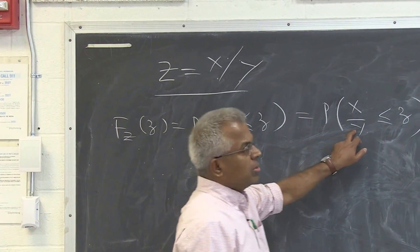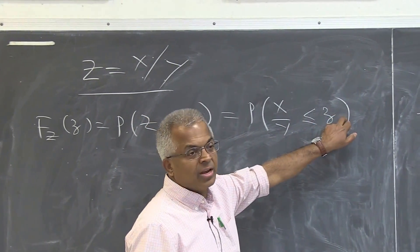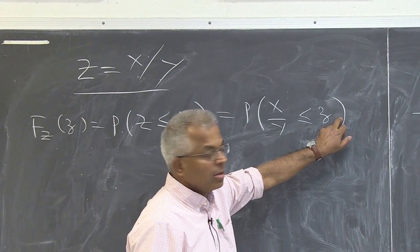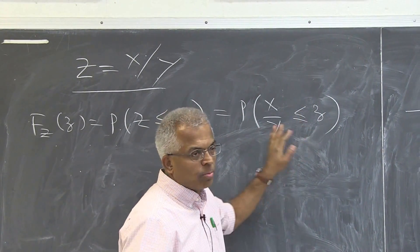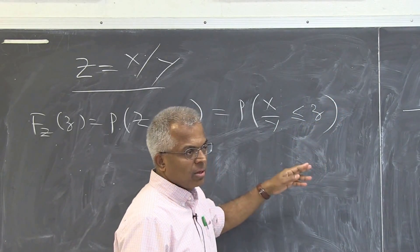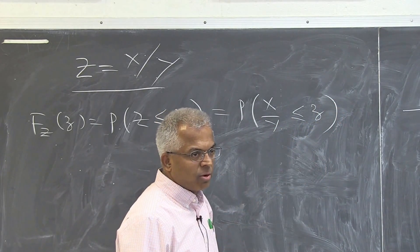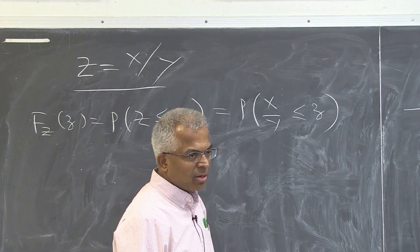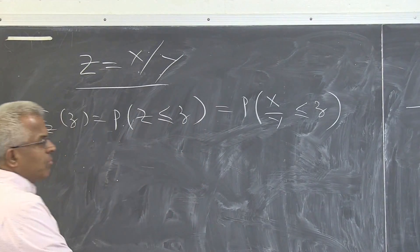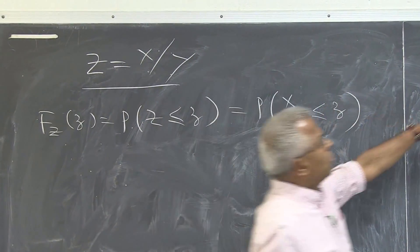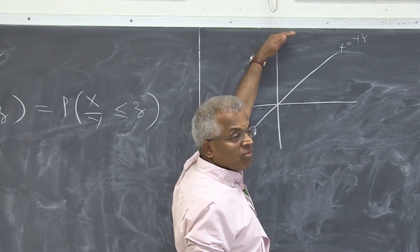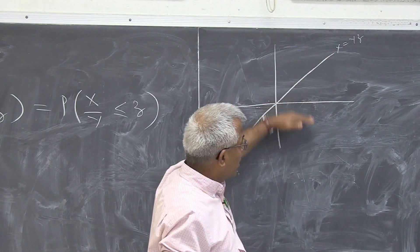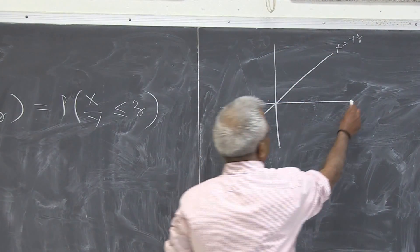So look at the, this is the dynamics. We want to bring this random variable here. But if this was an equal sign, there is no problem, you just bring it over. Because it is an inequality, we have to worry about positive and negative. So what I am going to do is, this is the whole region. Y positive I need to worry about separately. Y negative I need to worry about separately.